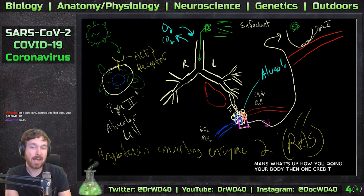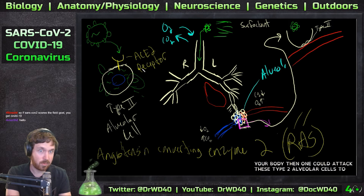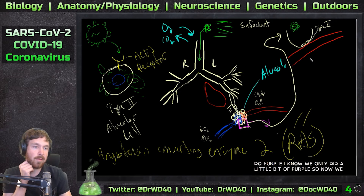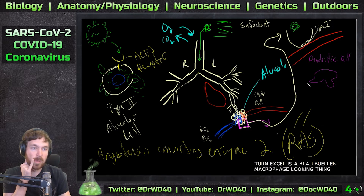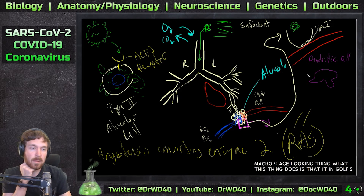When this happens, this is when your body finally sees it. Your body could then attack these Type 2 alveolar cells to destroy them because these cells are signaling 'something's infecting me, help.' So now we have a dendritic cell - a dendritic cell is a blobular macrophage-looking thing - and what this thing does is that it engulfs the virus.